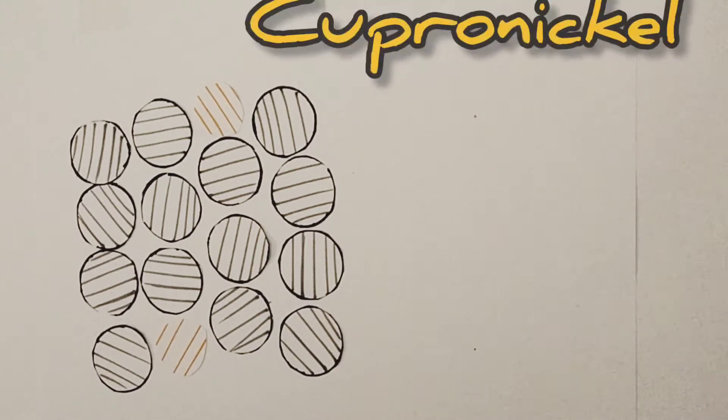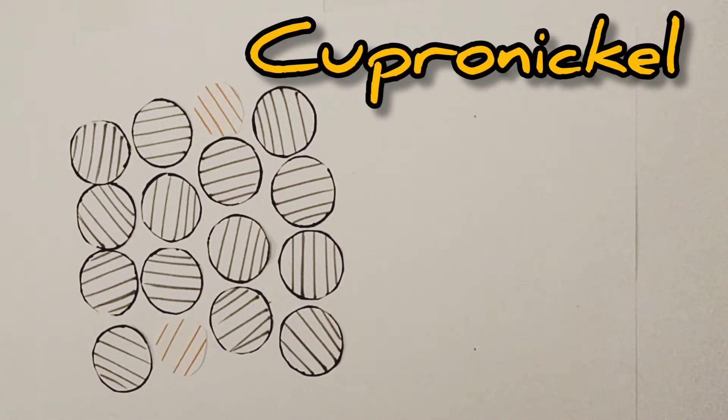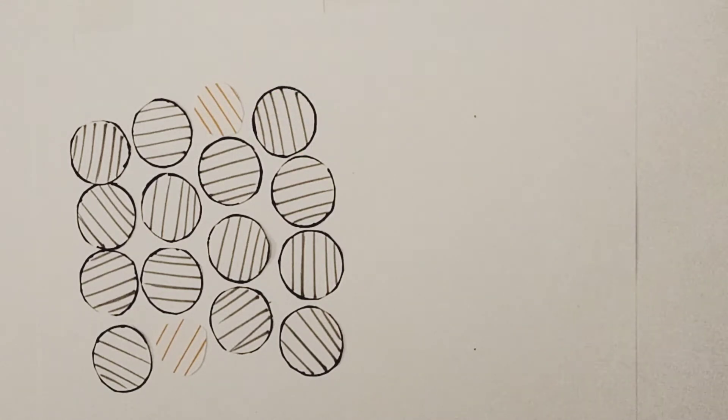The first one I'll talk about is known as cupronickel. It's an alloy of copper and nickel and it's found in our coins.